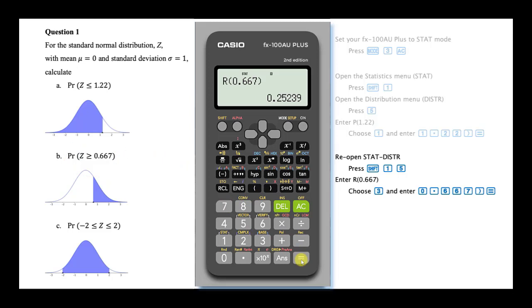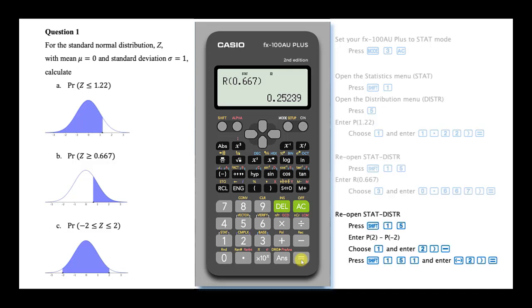To perform our final calculation, once again reopen the statistics distribution menu by pressing shift and then 1 and then 5. Choose the P calculation and enter the Z value. Close the brackets and this time enter the subtraction operator. In a similar fashion, enter the second P calculation and press equals.